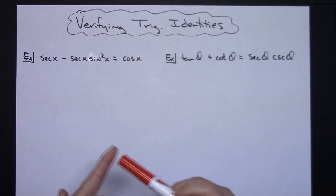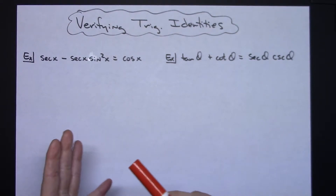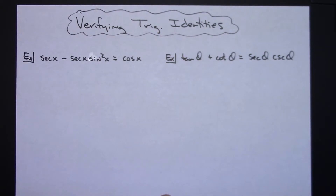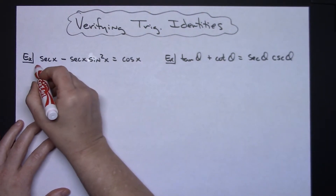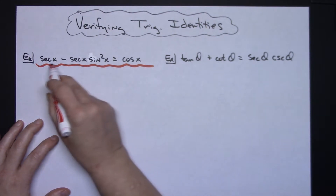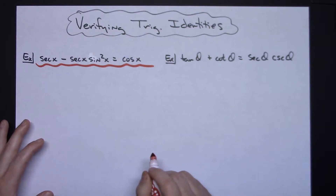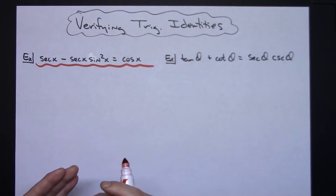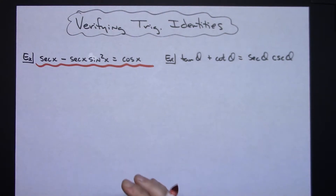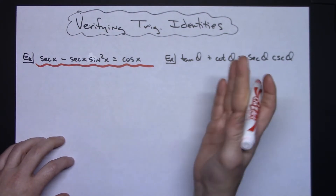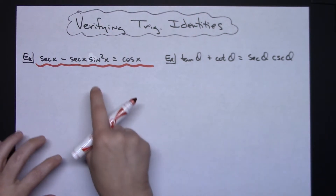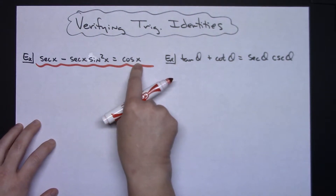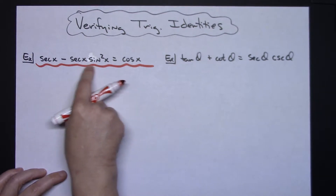I'm going to assume that you have all of your trig identities already memorized — you know your reciprocal identities, you know the Pythagorean identities, and that you've worked with a lot of properties with these trig identities. Generally in my class I have students start with either the left side or the right side and try to do substitutions and algebraic techniques to get down to the other one. Start with the side that is more complicated — this left side has a lot more going on as opposed to just cosine x, so I'm going to start with the left side.